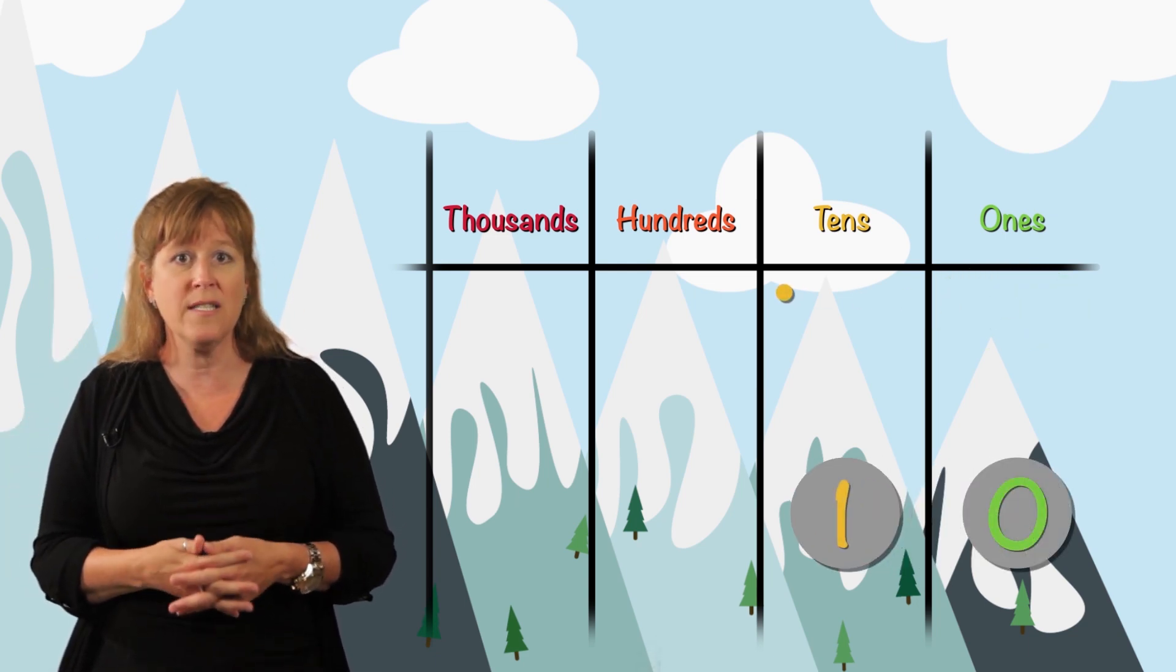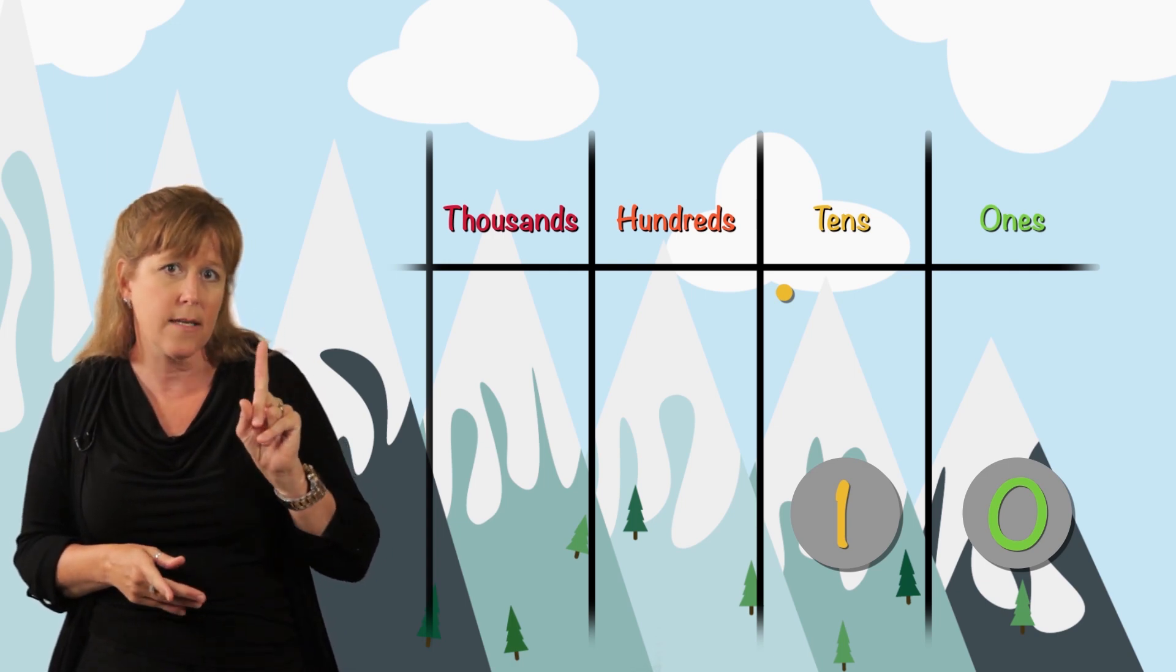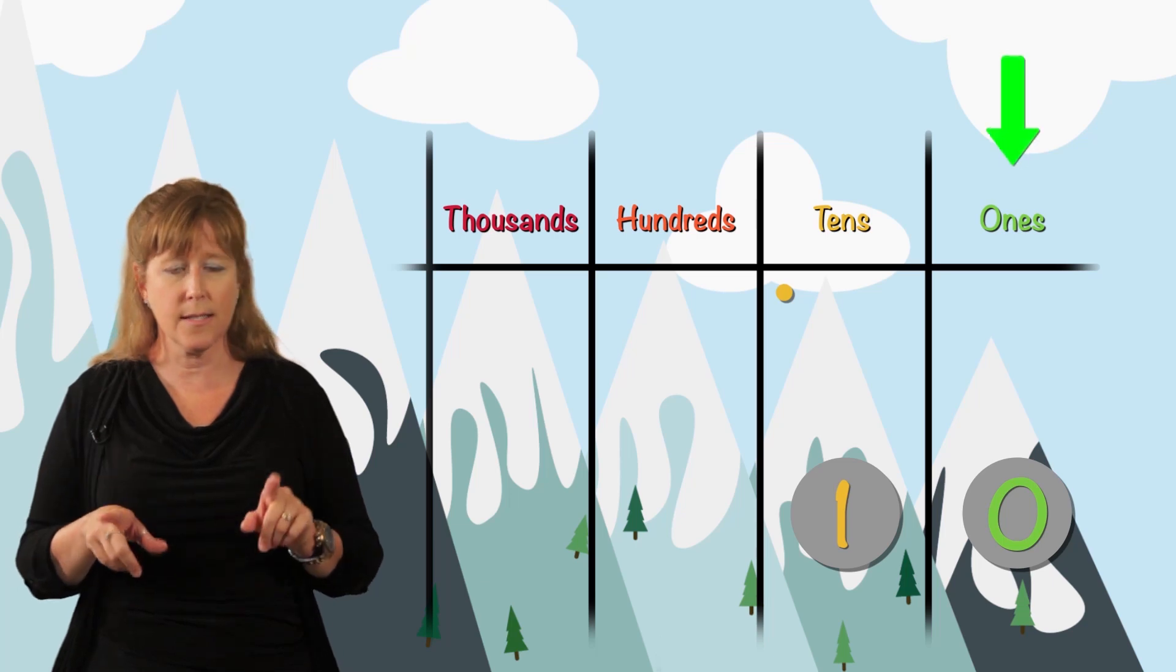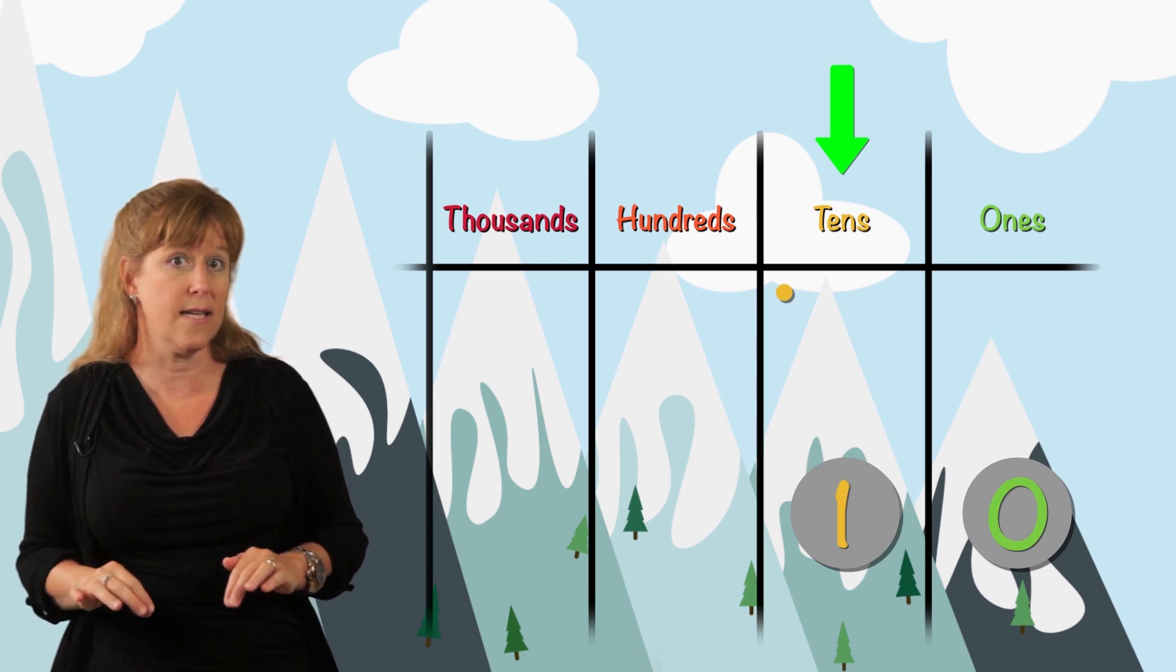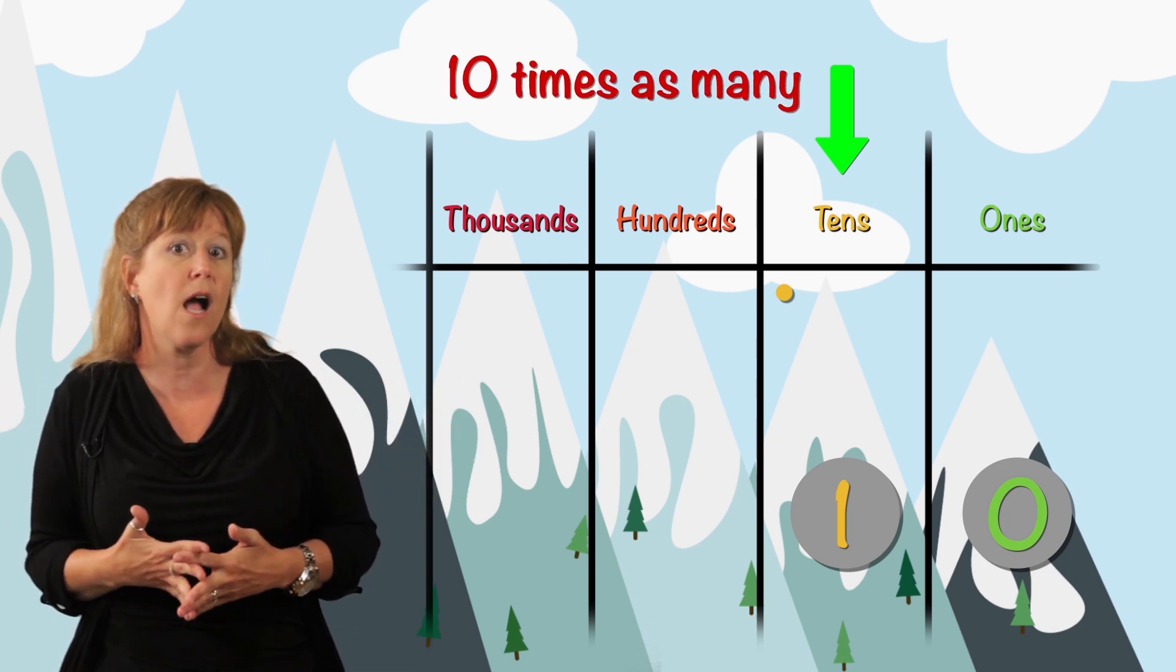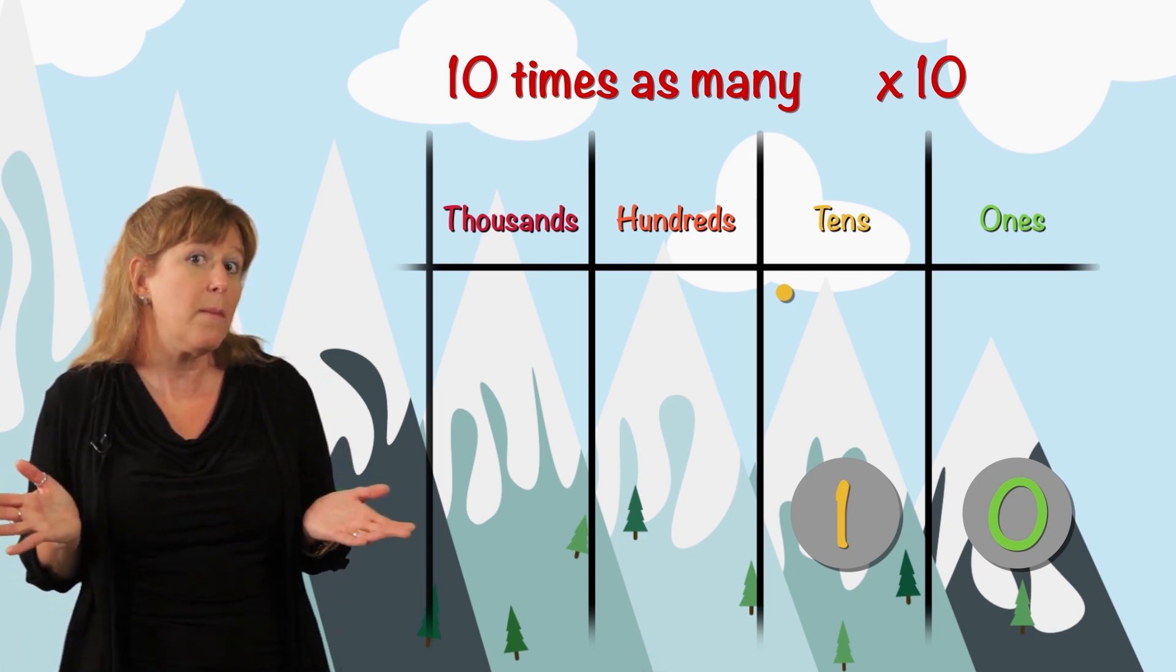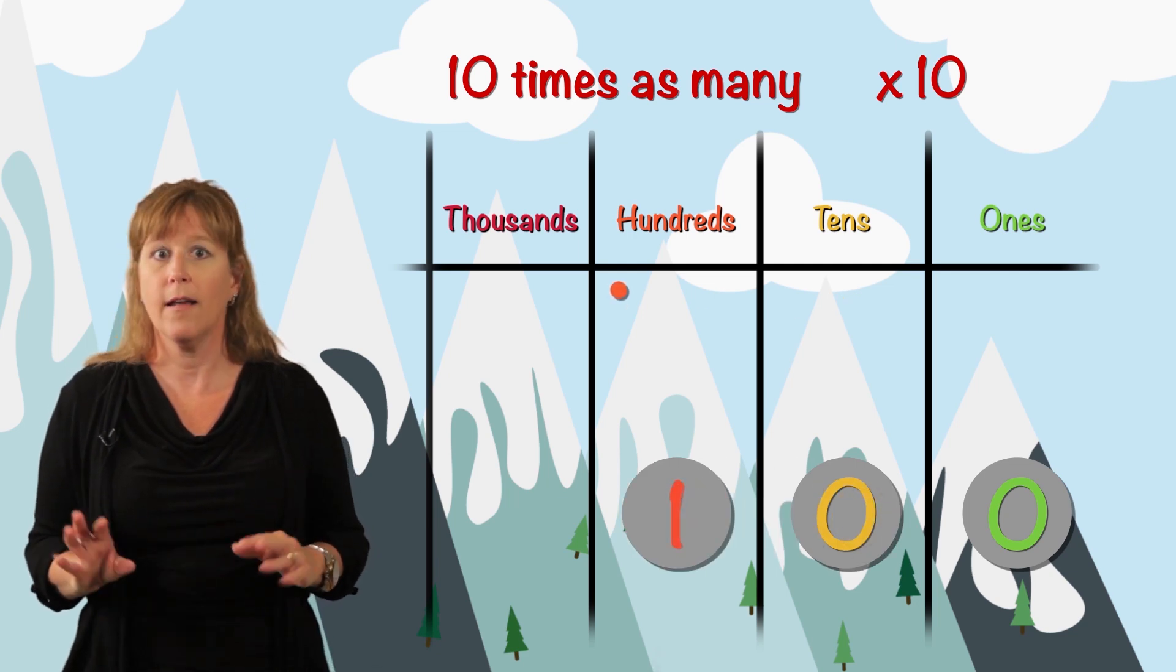So now we have one disk in the tens place. But look at this. This one disk in the tens column really represents ten ones. So a disk in this column is worth ten disks in this column. We can say that a disk in this column is ten times as many as one in the column to the right. Ten times as many is a way of writing times ten. Now what if we count up ten tens? We bundle.